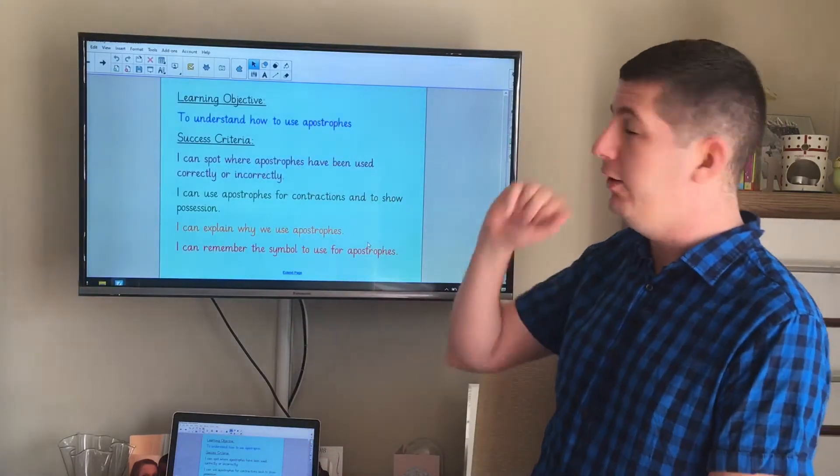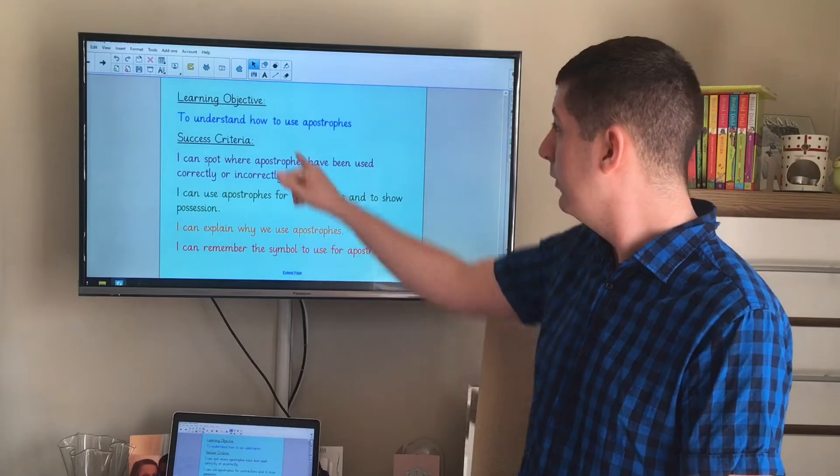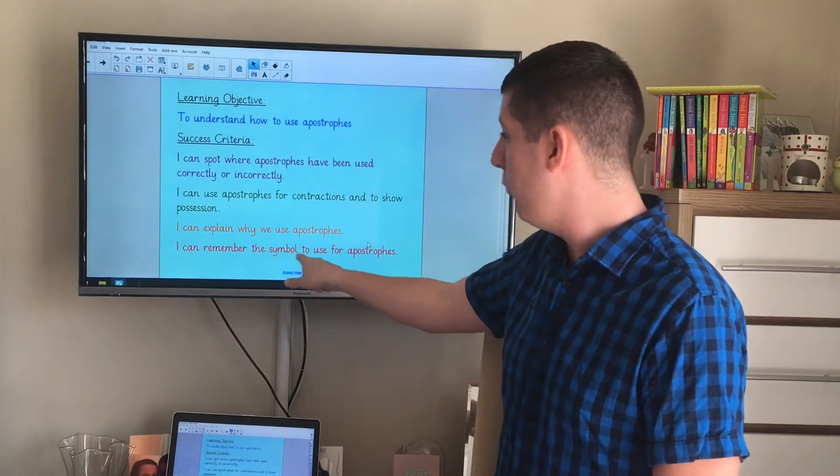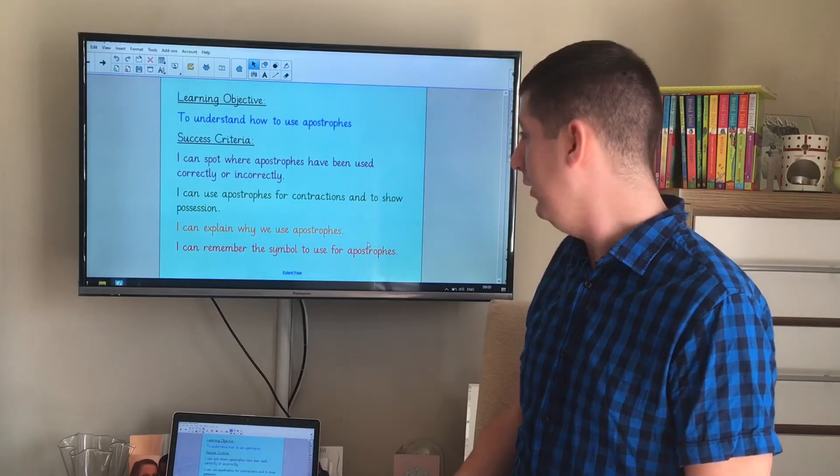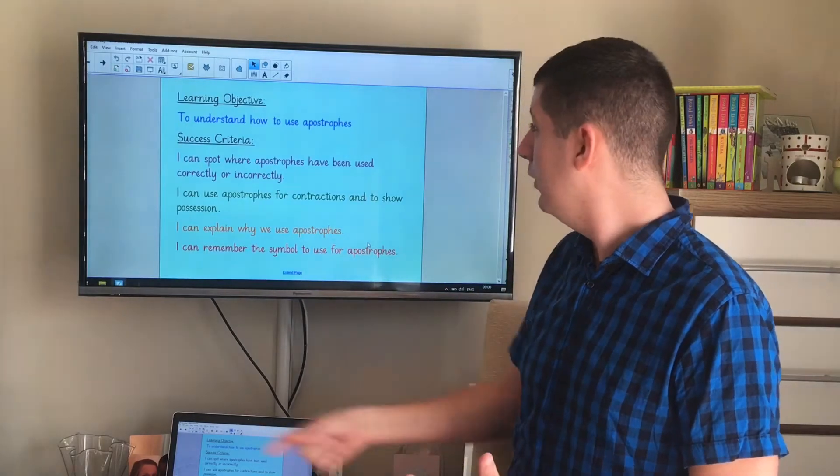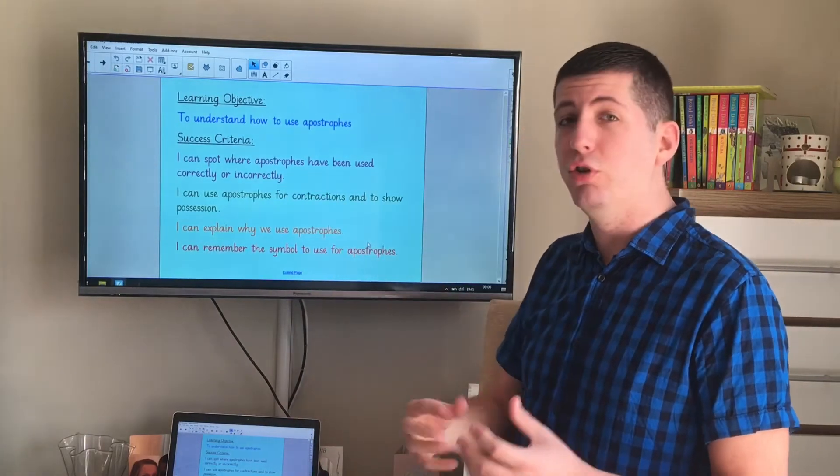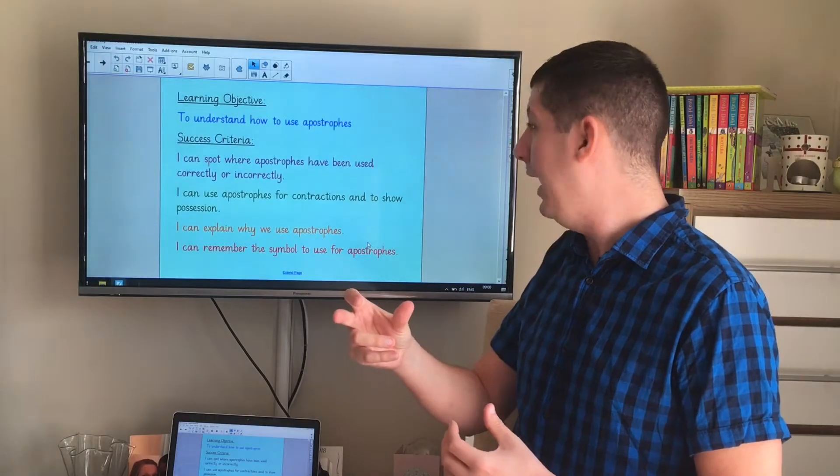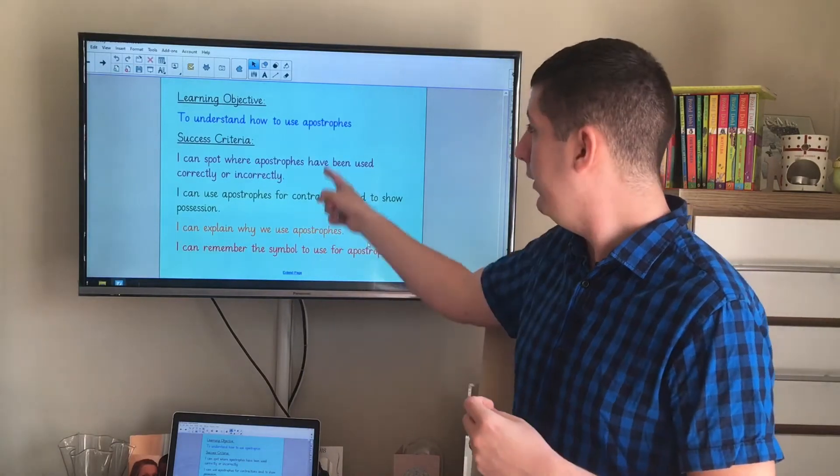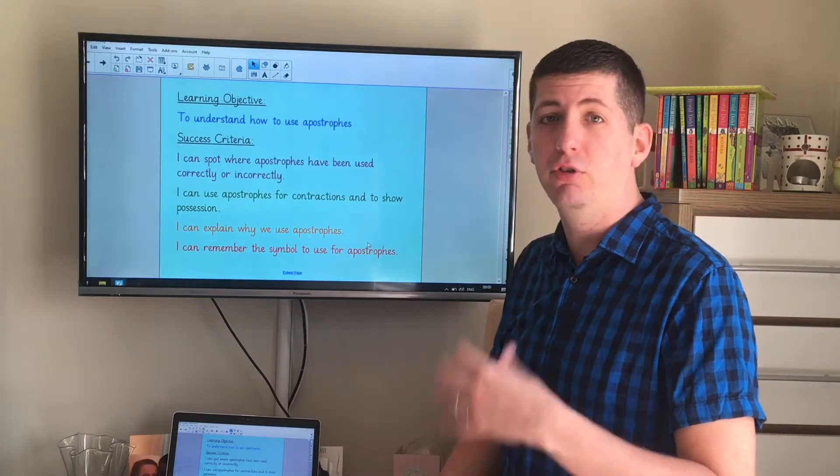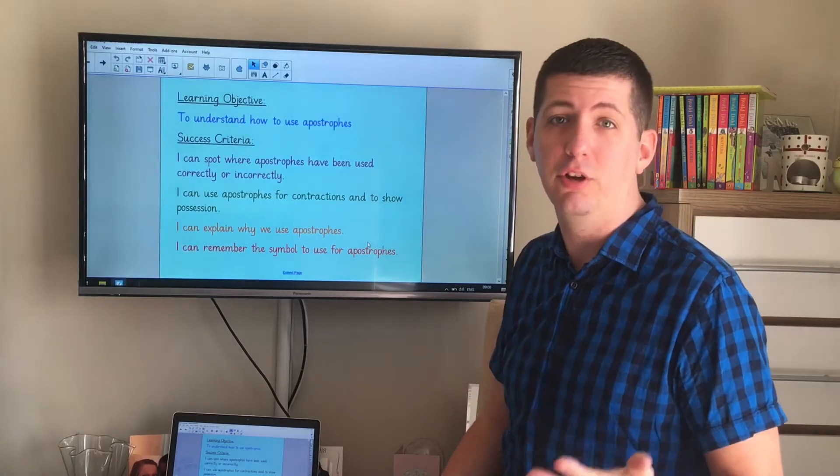Our objective is to understand how to use apostrophes. To be successful today, we're going to see if we can remember what the symbol is for apostrophes, explain why we use apostrophes, use apostrophes for contractions and to show possession, and spot where apostrophes have been used correctly or incorrectly and correct those mistakes.